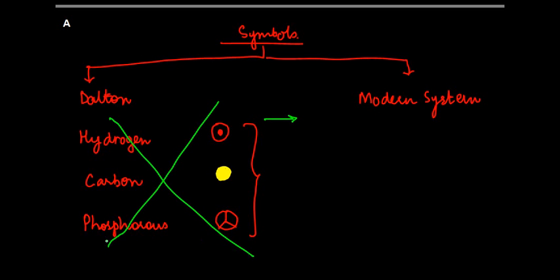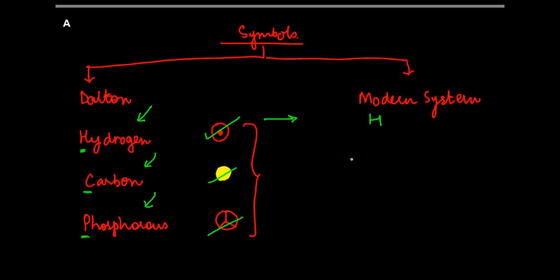So instead of remembering all this, the modern system what it did was it kind of abolished all the use of these kinds of symbols. These were done away with. But instead, what they did was they said, why do we need to use these? Instead, why not use the first alphabet of a given thing as its symbol? So let's say, for example, for hydrogen let me use H, then for carbon let me use C, or for phosphorus let me use P.